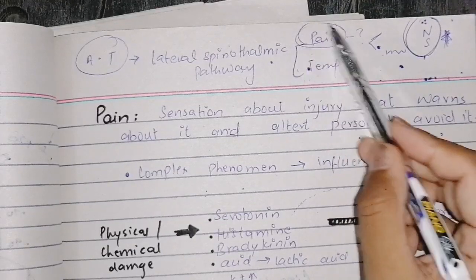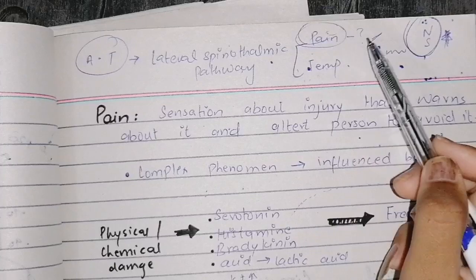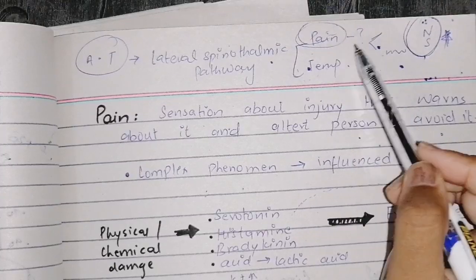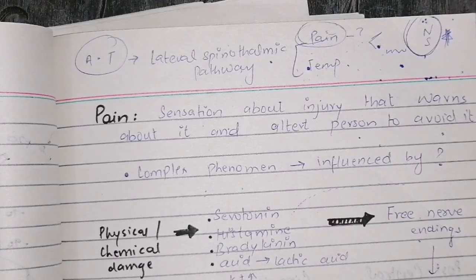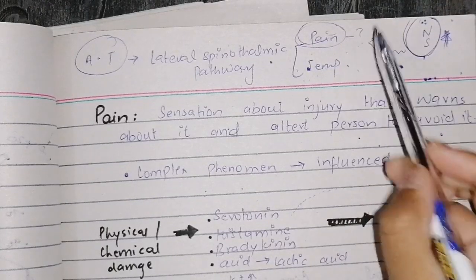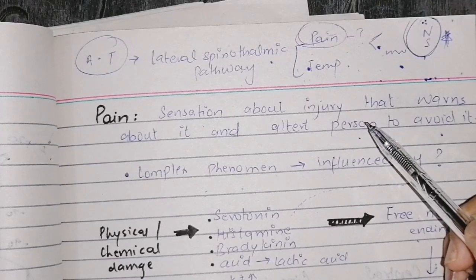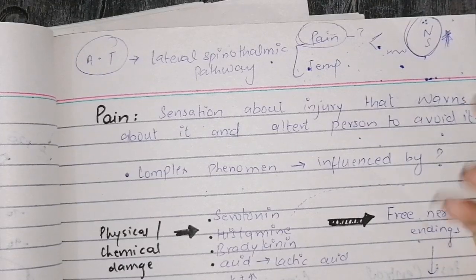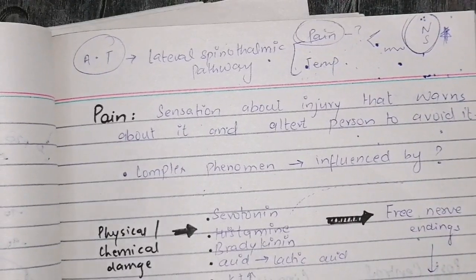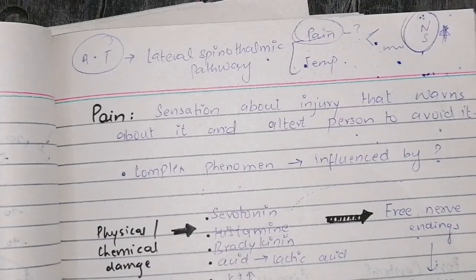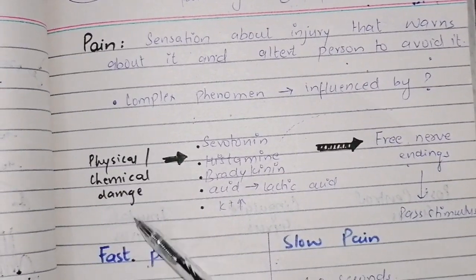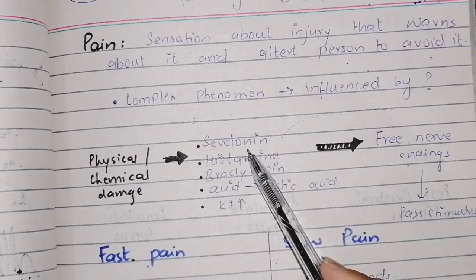Today we will look at some important things related to pain. The receptor — the free nerve endings — is stimulated. Pain is especially fast and slow; that is very important. Pain is basically a sensation about injury. In our body, when tissues experience physical or chemical injuries, some substances are released.